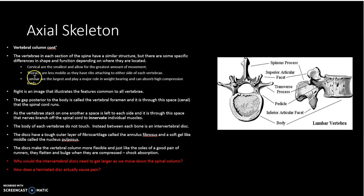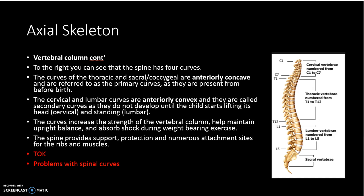We've got our cervical vertebrae in our neck, our thoracic with the ribs attaching to them, and our lumbar playing the high weight-loading position. Our spinal curves include the cervical curve, thoracic curve, lumbar curve, and the sacral and coccygeal curve. The thoracic and sacral-coccygeal curves are called primary curves because they're present as soon as the fetus begins developing. The fetus develops in a tucked-up fetal position — knees to chest and chin to chest — so the spine is in a permanent curve, which is why these are the primary curves.